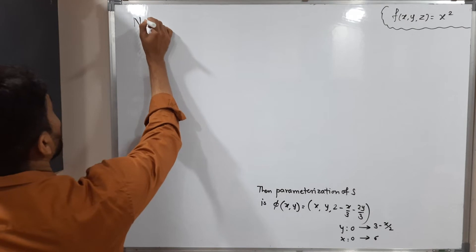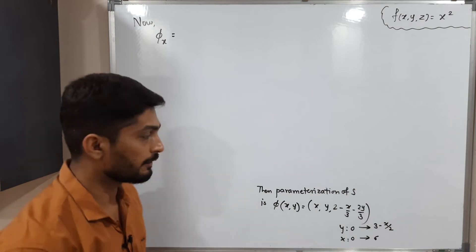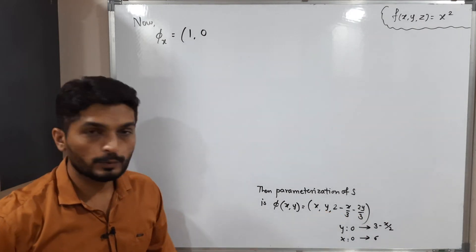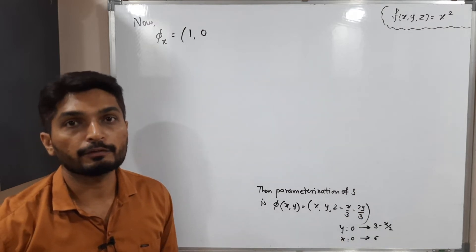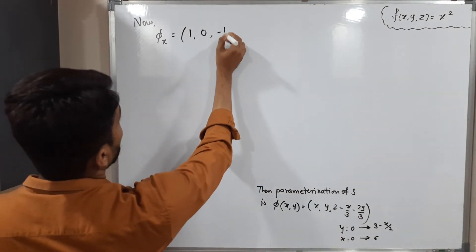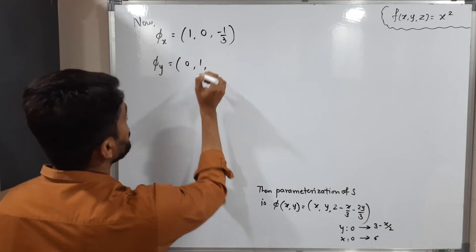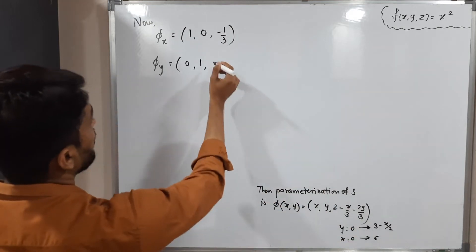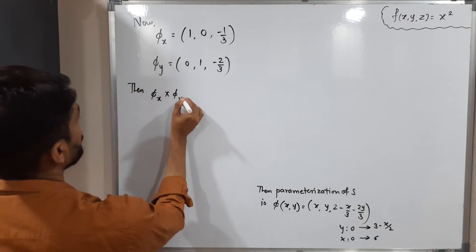Computing the partial derivatives component-wise: Phi_x, the derivative of Phi with respect to X, gives (1, 0, -1/3), since the X component differentiates to 1, the Y component (which is constant with respect to X) gives 0, and the Z component (2 - x/3 - 2y/3) gives -1/3. Phi_y, the derivative with respect to Y, gives (0, 1, -2/3), since the X component gives 0, Y gives 1, and the Z component gives -2/3.